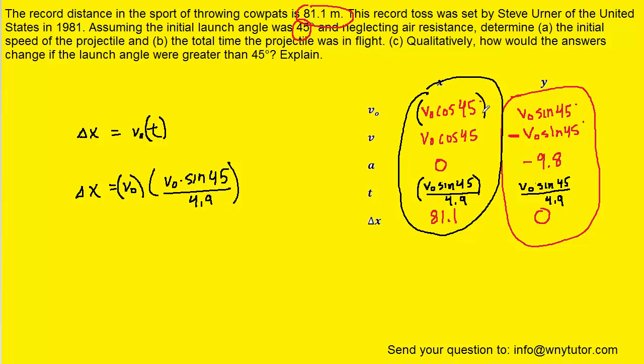We have V0 multiplied by V0, so that can be V0 squared. Then we can multiply cos 45 by sin 45. Do that on your calculator in degree mode and you'll get a half. So we can rewrite this equation as delta x = V0^2 × 1/2 / 4.9.